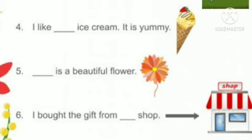Fourth sentence is, I like dash ice cream. It is yummy. The ice cream is near or far? Ice cream is near. So, we use this. This ice cream.